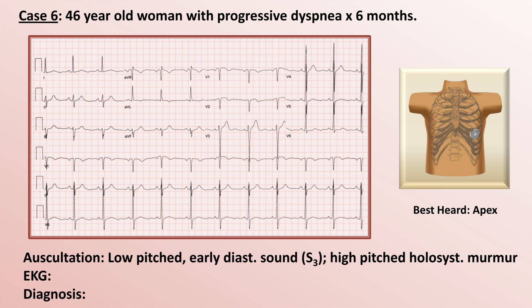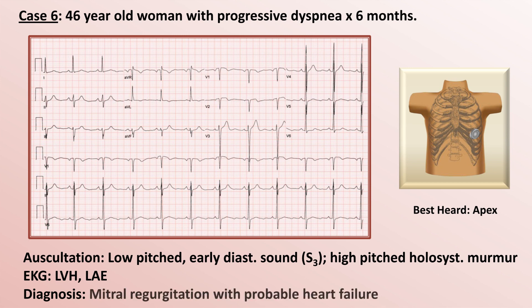Despite the notching in leads 3 and AVF, the QRS morphology is not particularly abnormal in the six frontal leads. However, the amplitude of the QRS complex in the six precordial leads is modestly elevated, consistent with yet another example of LVH, though this example is less obvious than the three examples in the previous half of the lecture. The unifying diagnosis: this patient has mitral regurgitation with probable heart failure.